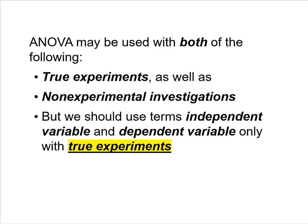Having discussed the difference between true experiments and non-experimental investigations, remember that analysis of variance can be used with both kinds of studies. I just ask students to be careful about the terms they use: use independent variable and dependent variable only for true experiments. For non-experimental investigations, use predictor variable and criterion variable, as they are more general-purpose terms.